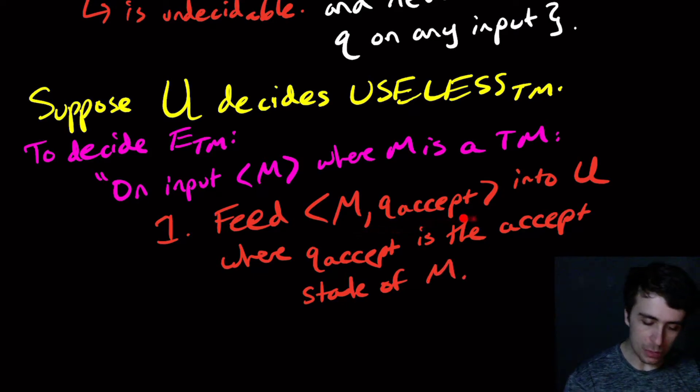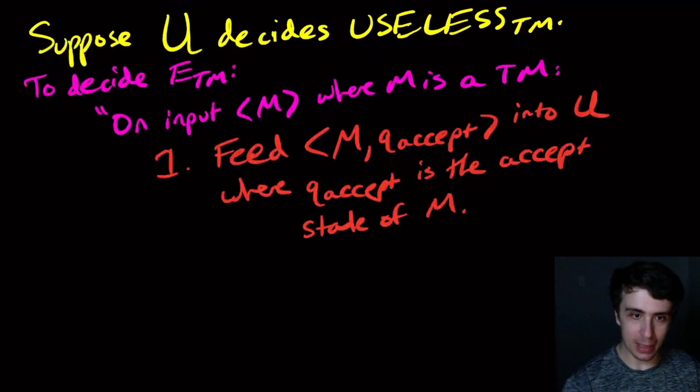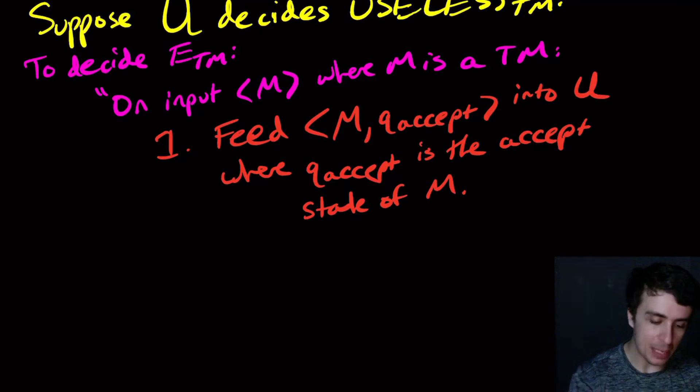We're just feeding this into U, which supposedly can figure out whether M ever enters the accept state on any input whatsoever, and that figures out whether or not the language is actually empty or not.